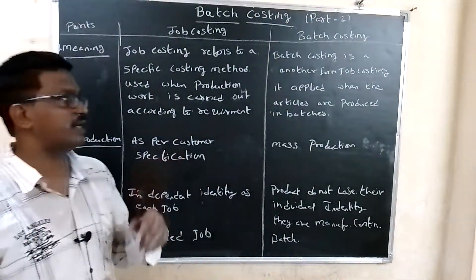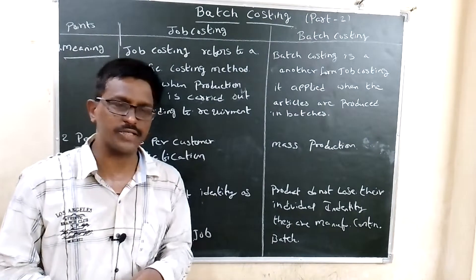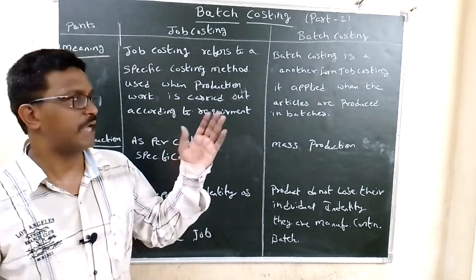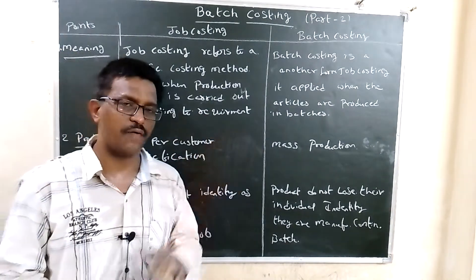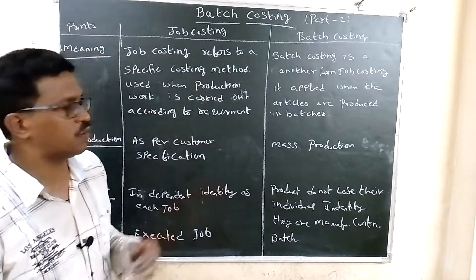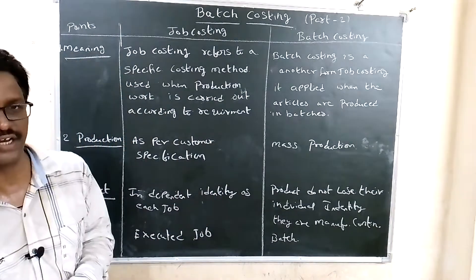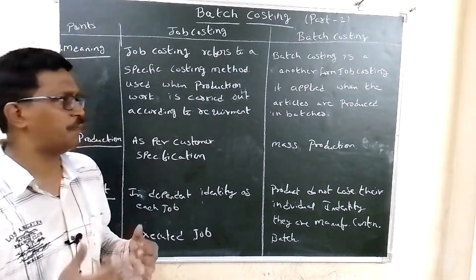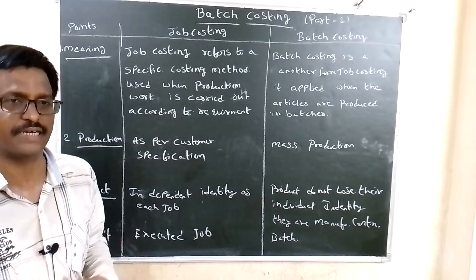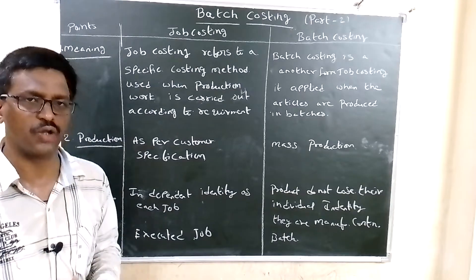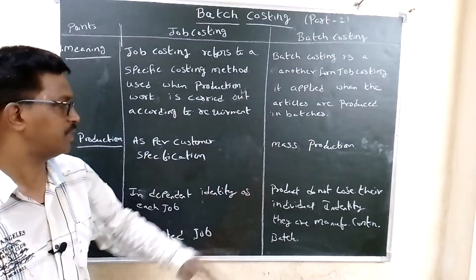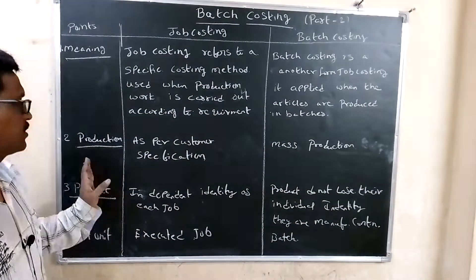Batch costing is another form of job costing. Here, goods are manufactured in bulk — that is, batch-wise. The goods are produced in larger quantities, and that is batch costing.